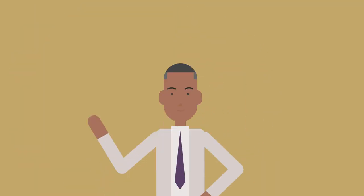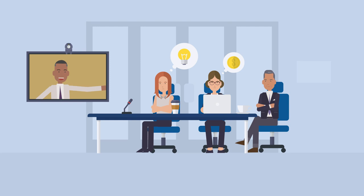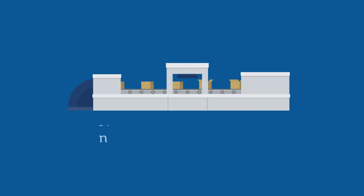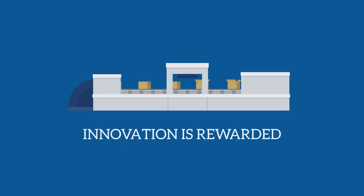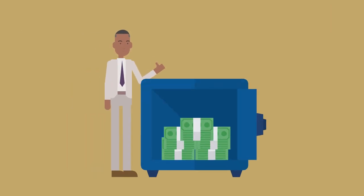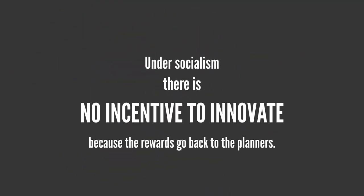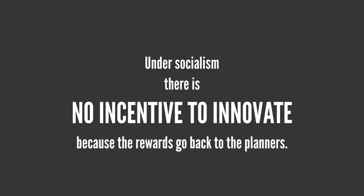For example, profits reward and encourage innovation and efficiency. If you are the first to create a new product or find a cheaper way to provide a service, the individual who risks capital is financially rewarded. Under socialism, there is no incentive to innovate because the rewards go back to the planners.